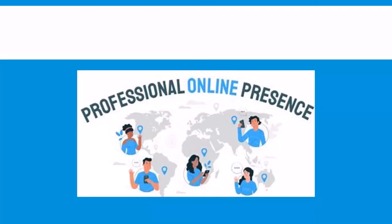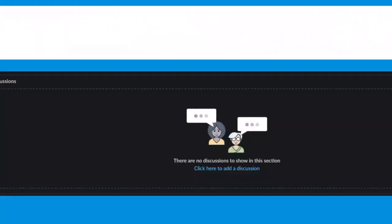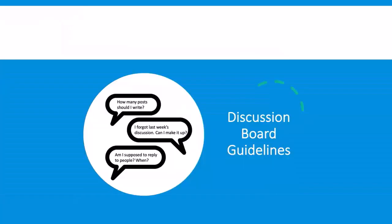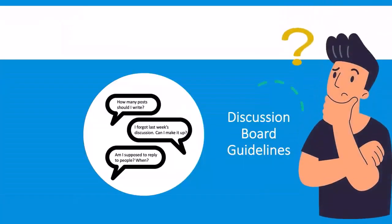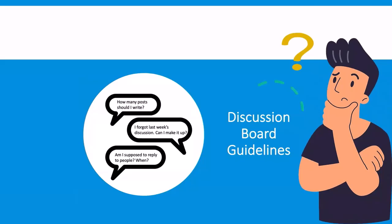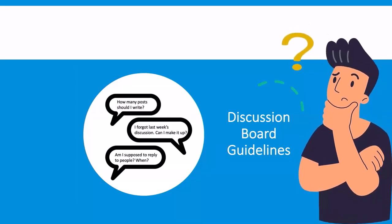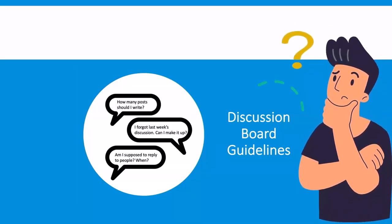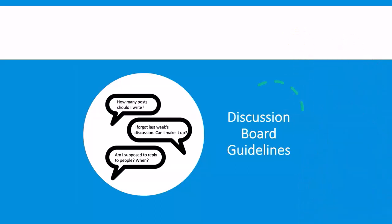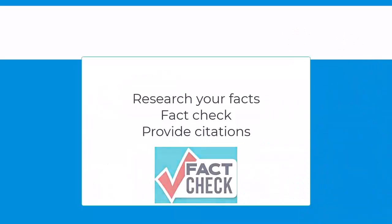Read what you've written out loud; if you aren't sure it will be perceived as respectful, rewrite it. Read and formulate responses carefully: in discussion forums, when you read communication written by other students, take the time to thoughtfully examine it, considering all points and the possibility that the text doesn't convey their intention. Before you respond, take the time to research your own facts and provide citations for information stated within your communication.